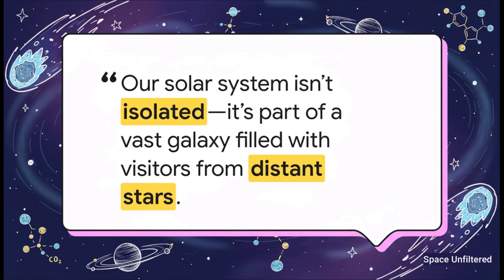This illustrates the final takeaway. Each interstellar object we discover reinforces the idea that our solar system is not an island. It is part of a vast interconnected galaxy with ancient messengers like 3I Atlas constantly traveling the voids between stars, carrying with them the secrets of their birth.